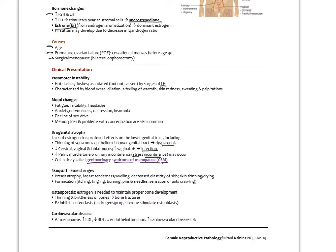Skin and soft tissue changes include breast atrophy, breast tenderness and swelling, decreased skin elasticity, and skin thinning and drying. Formication is an interesting symptom — the sensation of small insects crawling on the skin, presenting as itching, tingling, burning, or pins and needles, either all over the body or commonly in the pelvic area and groin, and can be a sign of low estrogen. Osteoporosis occurs because estrogen inhibits osteoclasts, while androgens and progesterone stimulate osteoblasts, so low estrogen leads to bone thinning and increased fracture risk.